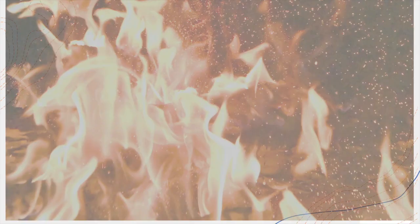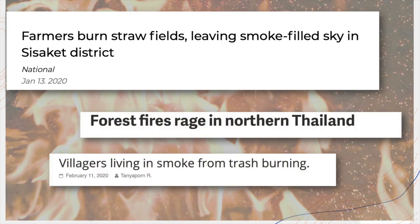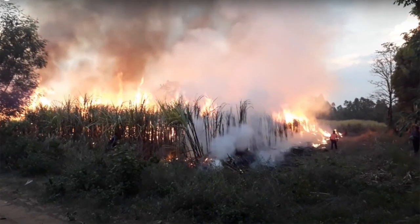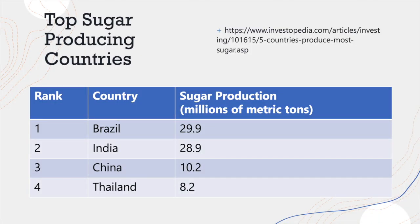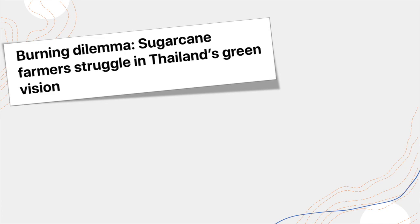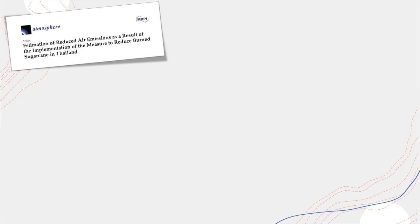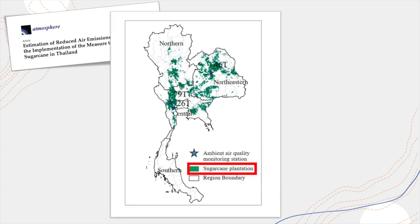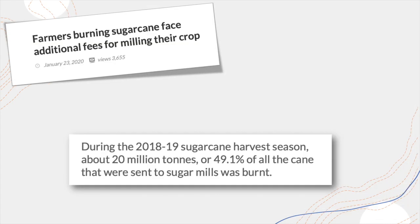So what is being burned? A lot of things — rice stubble, forests, trash. But what is really critical to PM 2.5 problems in the winter months is sugarcane. Thailand is the fourth largest sugar producer and second largest exporter in the world. More than 380,000 farmers and four and a half million acres of land are dedicated to sugarcane farming. If we look at sugarcane land and compare it to satellite estimates of land burned, we see that most sugarcane land is burned. In the 2018–2019 harvest season, approximately half of all sugarcane brought to the factory was burned.